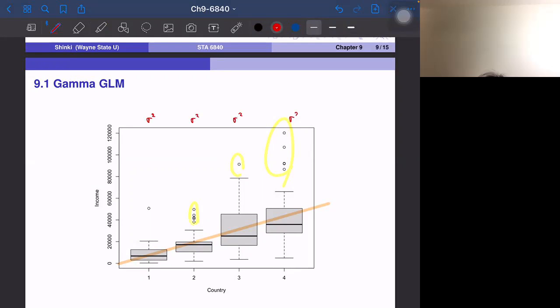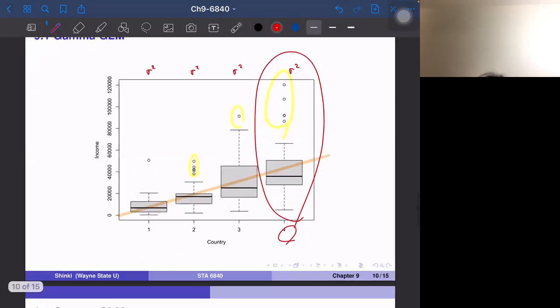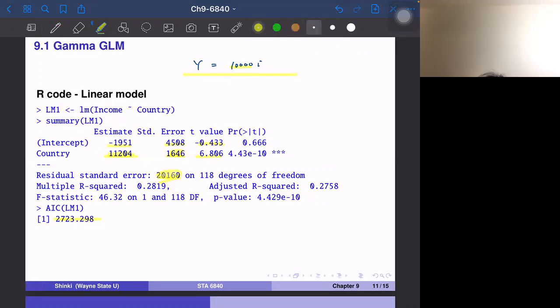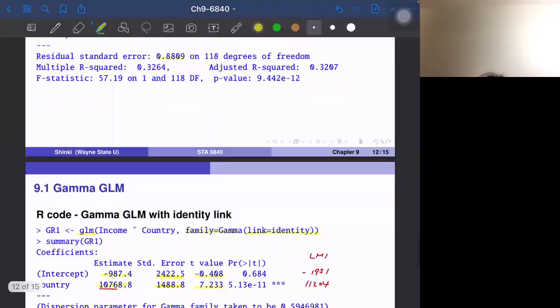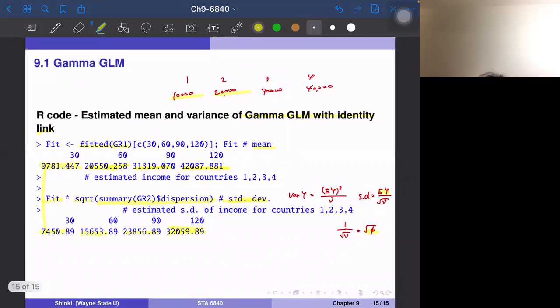If we use the linear model, we estimate the sigma for the same, the same sigma for all countries, but that is certainly not correct. If we see the data, we have larger variation for larger number in the country. And actually in linear model, the sigma is fixed. So this is the estimated sigma, that is 20,160. But in the Gamma GLM, the standard deviation also depends on the mean. So this is actually estimated more accurately. So this is an example of Gamma GLM.